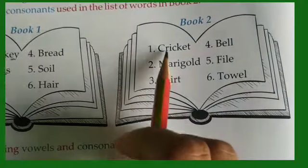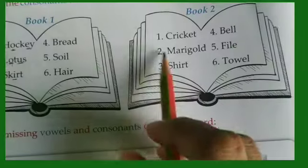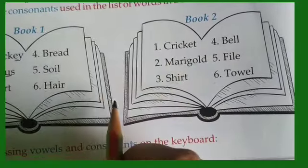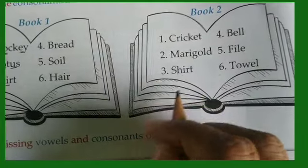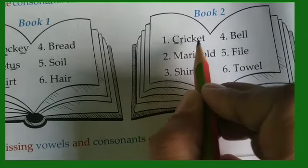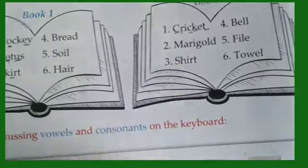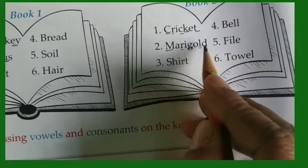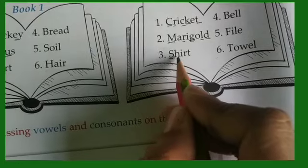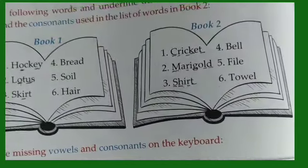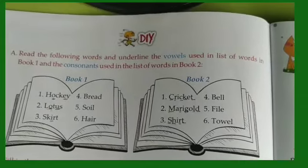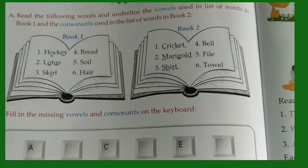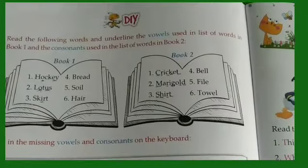Book 2 — now this part, numbers 1, 2, and 3, you will do along with me; 4, 5, and 6 do as homework. Cricket — the consonants are C, R, C, K, T. Marigold — M, R, G, L, D. Number 3, shirt — S, H, R, T. So children, do it yourself on page 12, and on page 11 fill in the consonants. Till we meet again in the next video, bye children!